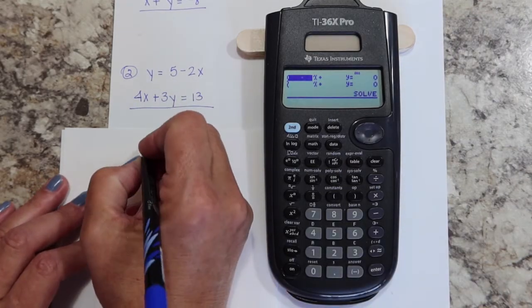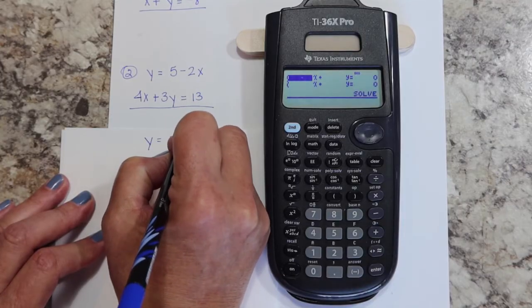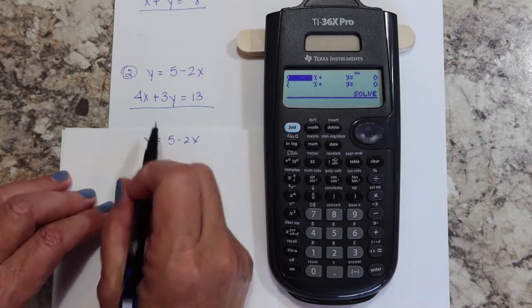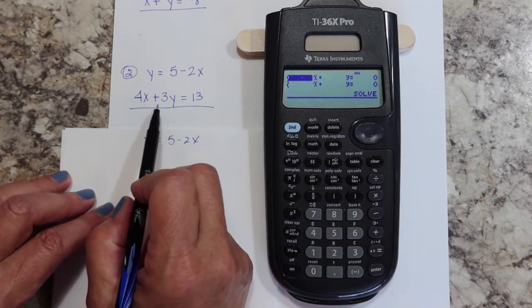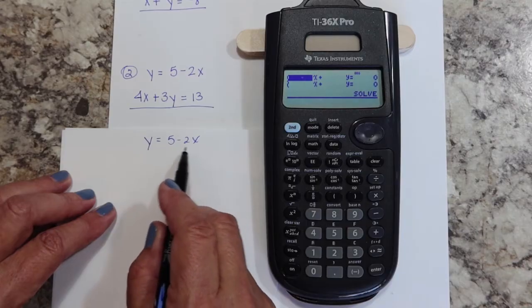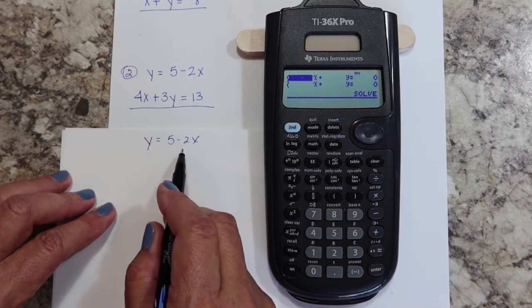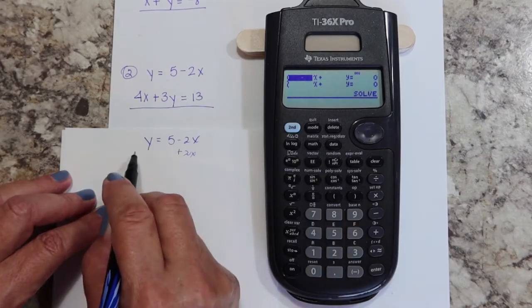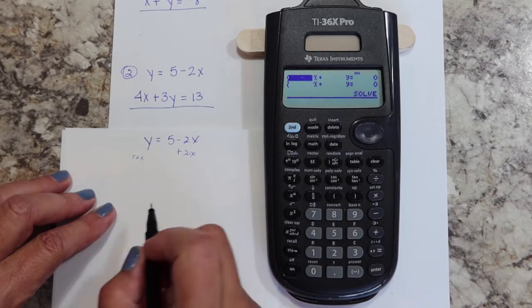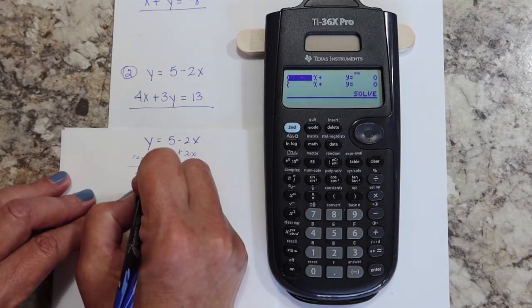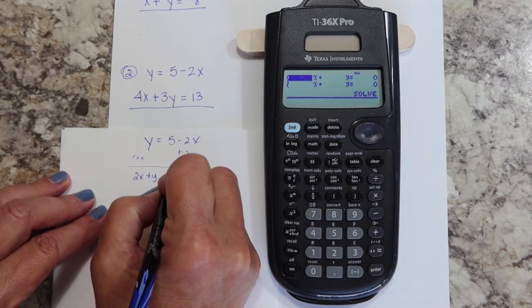Which is Y equals five minus two X. And I'm just going to manipulate it, rearrange it so that it is in standard form with my X term first, my Y term, and then my constant. This is the term right here that's out of place and it's been subtracted, so I'm going to add two X to each side. Now I have 2X + Y = 5.